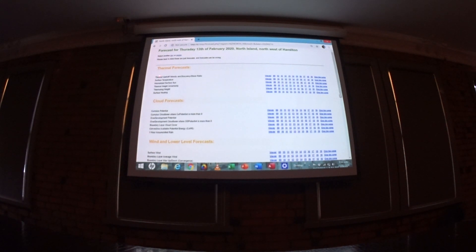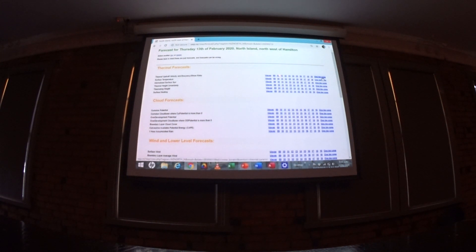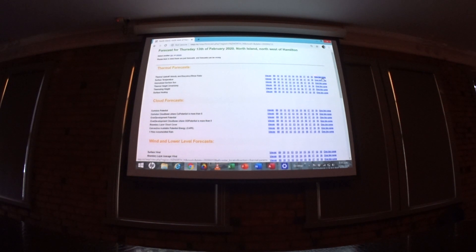This is the thermal forecast, the thermal updraft velocity buoyancy shear ratio. We look at the stipple and the colors to give us the thermal strength. You can look at either a viewer which puts through each day, or you can look at each hour.